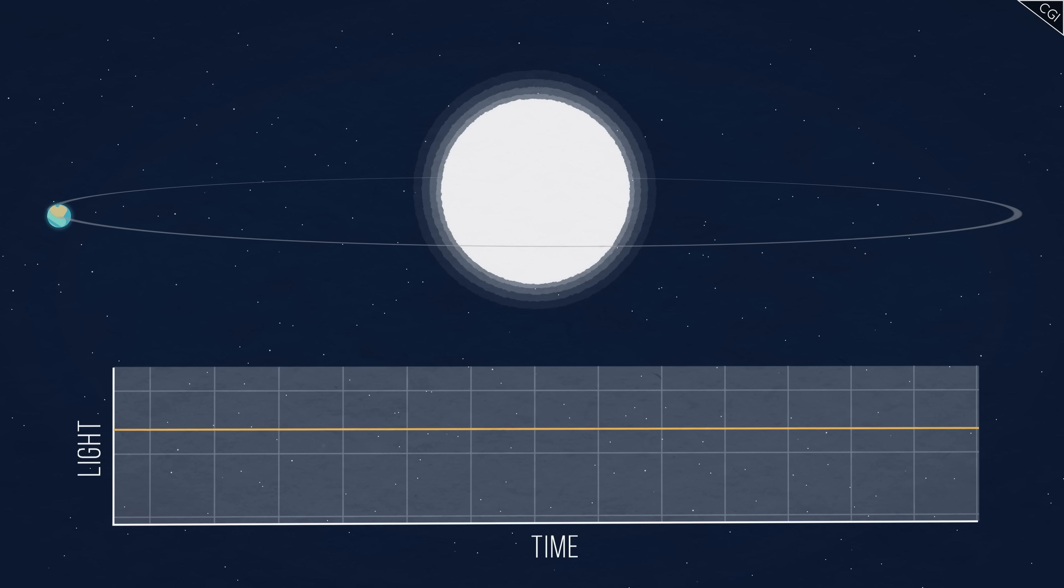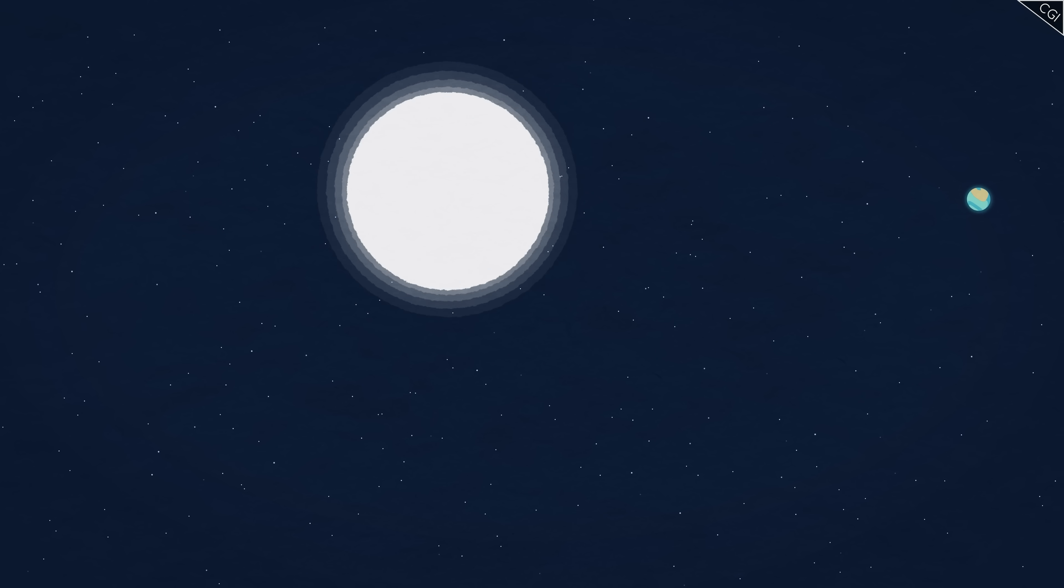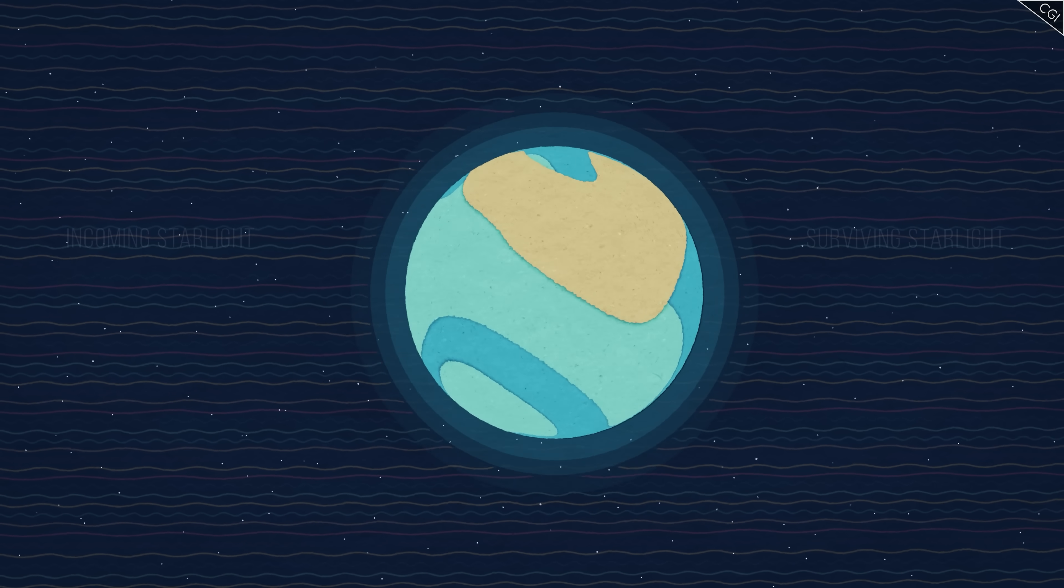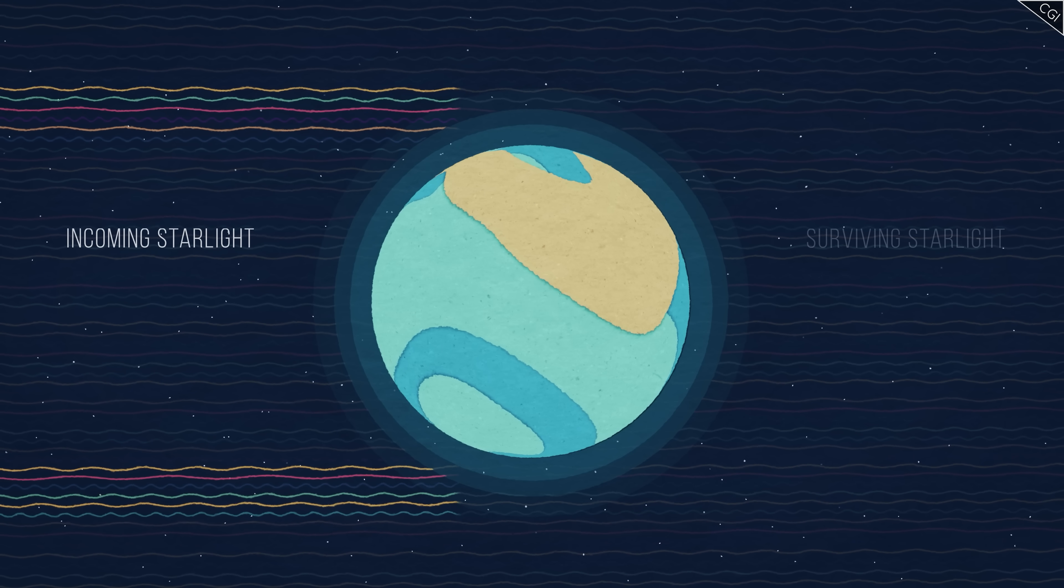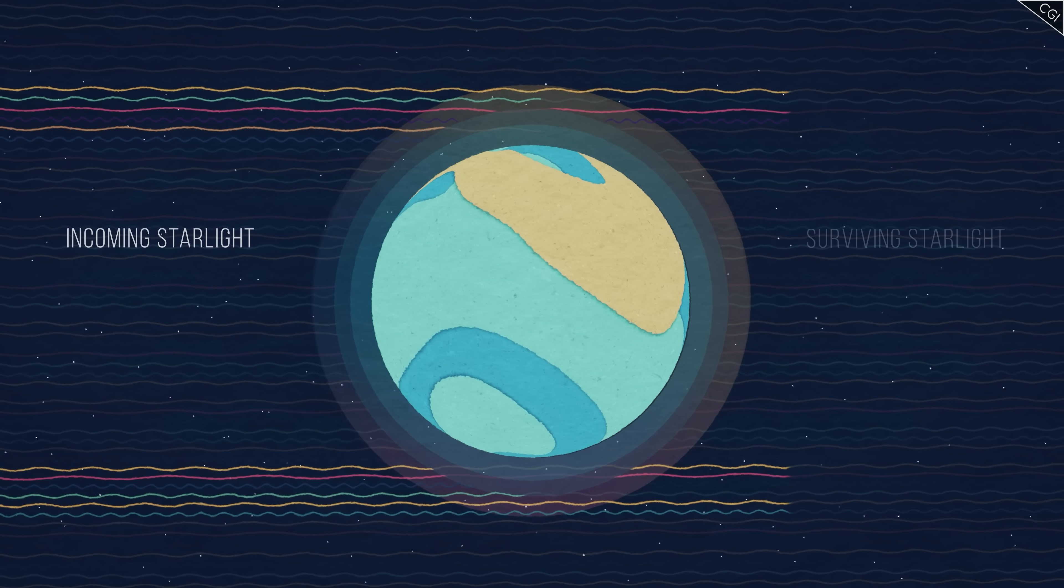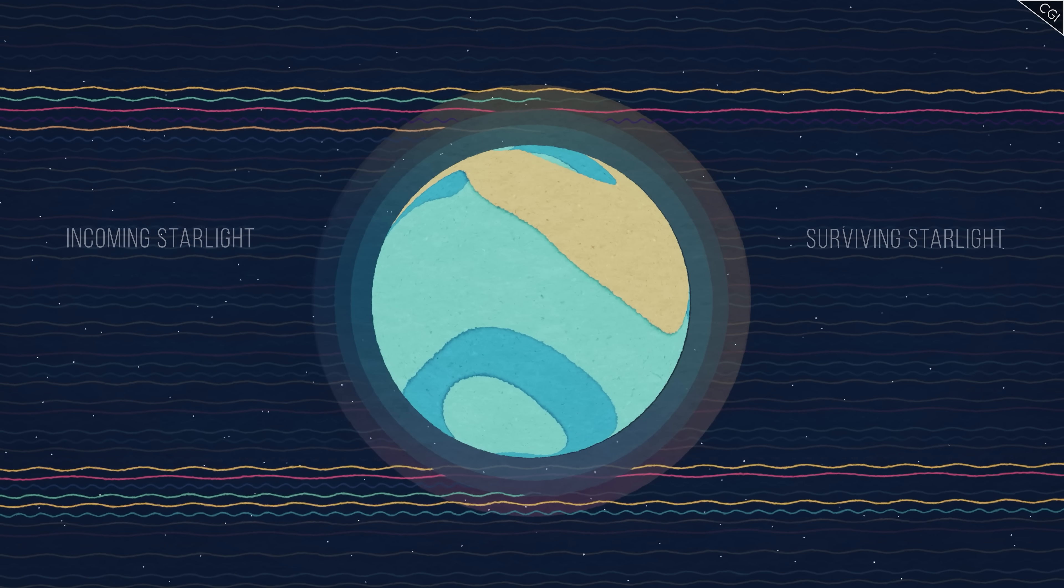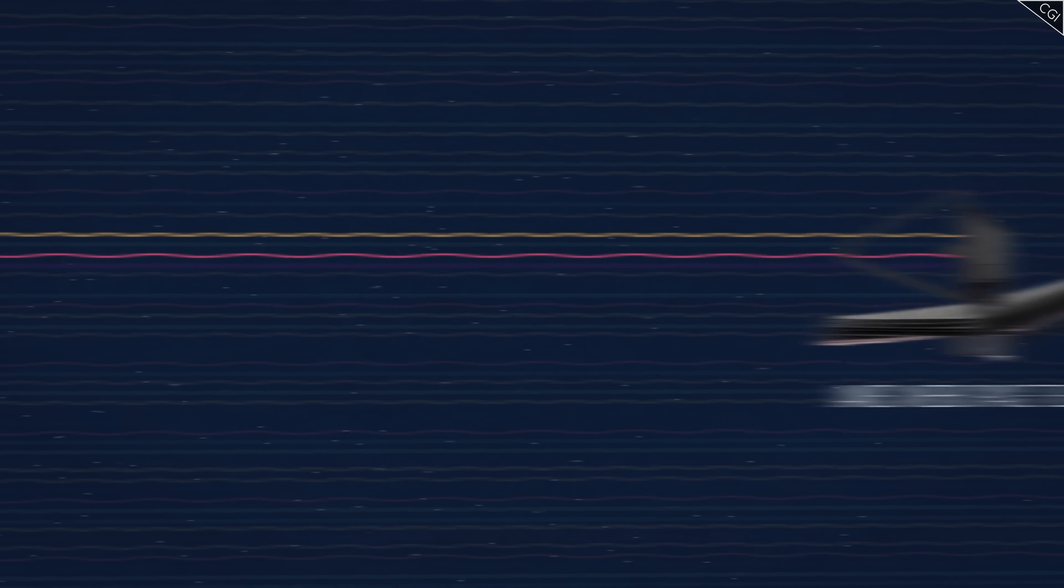Spectroscopy, the science of studying the chemical makeup of objects from their absorption lines, is a very versatile tool, and it extends to much more than molecular clouds or nebulae. Through it, we can also learn much about the atmospheres of exoplanets.